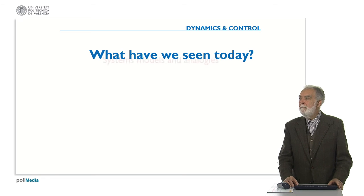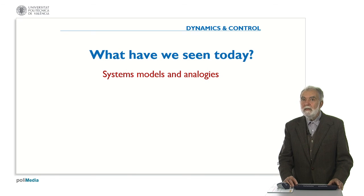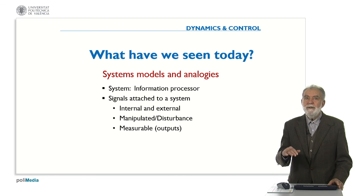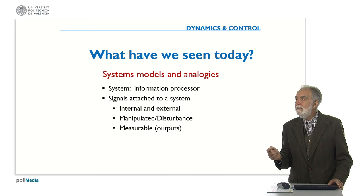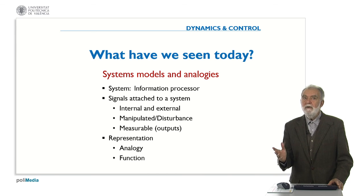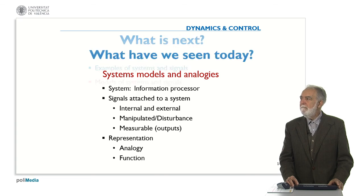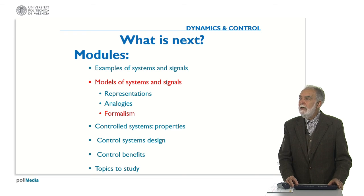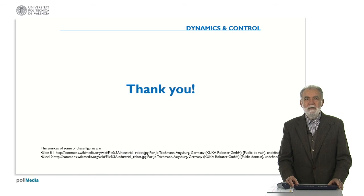So, what have we seen today? We have seen system models and analogies. We have considered the system as an information processor and the signals attached to a system that can be internal or external, manipulated or disturbances, and measurable if they are outputs. The representation can be by analogy or by means of a function, which will be the most common way of modeling systems. What is next? In this module we still have another item, which is the formalism, and this will be the topic of our next session. That's all for today. Thank you very much.